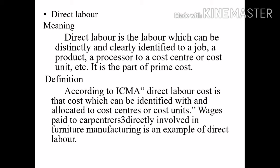Definition of Direct Labor. According to ICMA London, direct labor cost is that cost which can be identified with and allocated to cost centers or cost units. For example, wages paid to a carpenter for manufacturing furniture, and wages paid to a goldsmith for manufacturing gold jewelry — these are examples of direct labor cost.